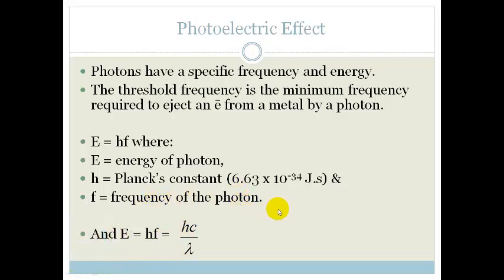We know that v equals lambda f, and v in this case is c, so c equals lambda f. But in this case we're talking just about frequency, so frequency equals c over lambda, and that's how they get that equation. So we can use E equals hf or we can use hc over lambda, and it means the same thing. And that there is the wave equation, which you should know about from our previous videos.